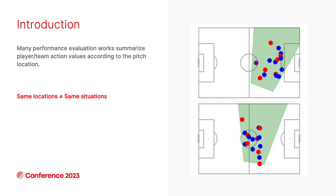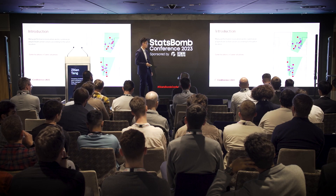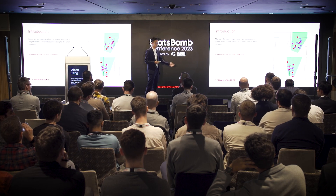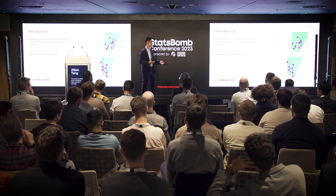For example, in these two figures, the purple circles are the on-ball players, the red circles are the teammates, and the blue circles are the defenders. In the first figure, the on-ball players are almost on the same location. However, in the first figure the opponents have retreated to defense, whereas in the second figure the on-ball player is facing the last defensive line.